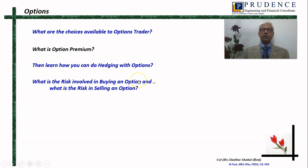Then learn how you can do hedging with options. What is the risk involved in buying and selling options? When you try to learn options, you will find that buying an option has a very limited risk — a very limited loss — and selling an option has unlimited risk. If you sustain a loss by selling an option, your loss could be unlimited. So why is it that people are selling options, if it is so clear that buying has very limited risk and selling has unlimited risk? In fact, buying and selling will happen only when there are equal numbers of buyers and sellers.